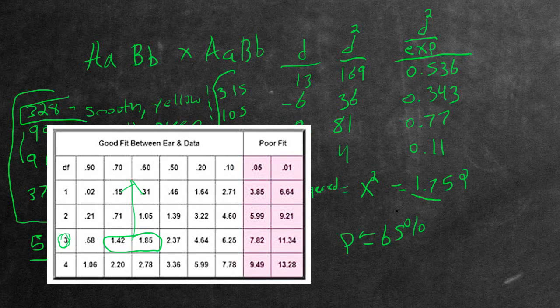Now a good rule of thumb is that if this probability here, if this percentage is ever less than 5%, the observed values, your observed progeny are actually not independently assorting. There's something else going on that's affecting the traits.